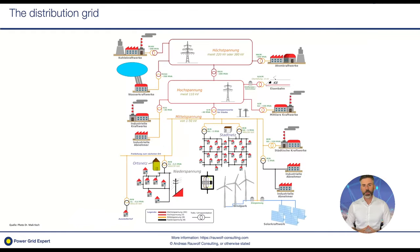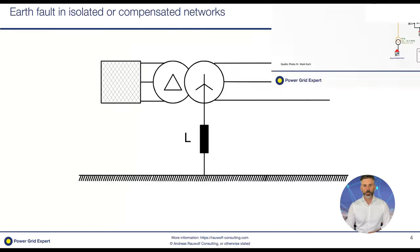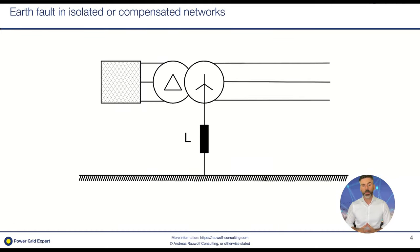We will focus on the distribution grid — the network between the power station, like 20 kV or 10 kV, down to the secondary substations. In compensated networks we have a so-called Petersen coil, and in isolated networks the star point is simply floating — there is basically nothing there.